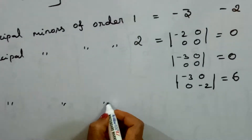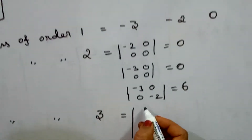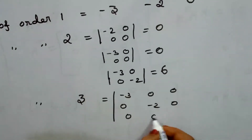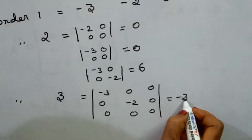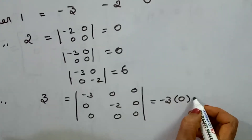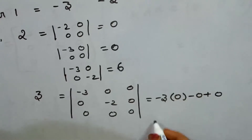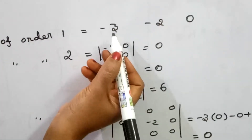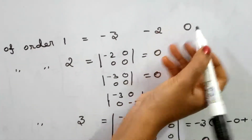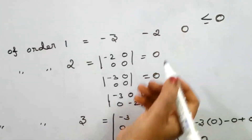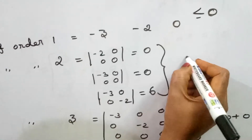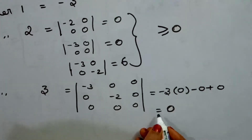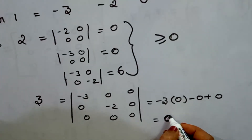The principal minor of order 3 is the determinant of the full given matrix: minus 3, 0, 0 / 0, minus 2, 0 / 0, 0, 0. The determinant equals 0. So the third order minor equals 0, the second order minor equals 6, and the first order minor (diagonal element minus 3) is less than or equal to 0.